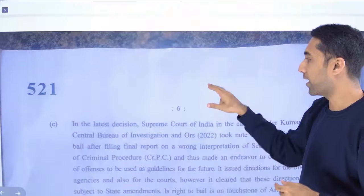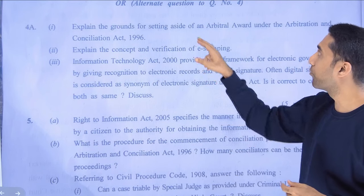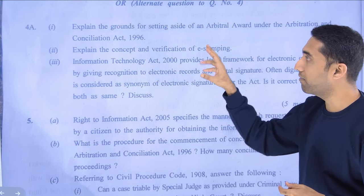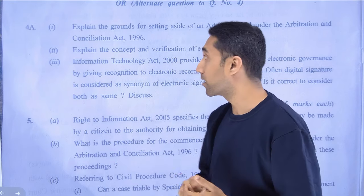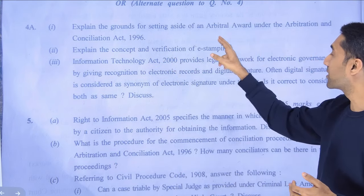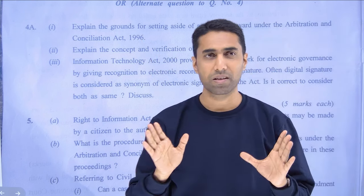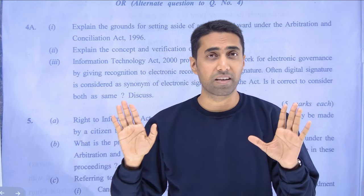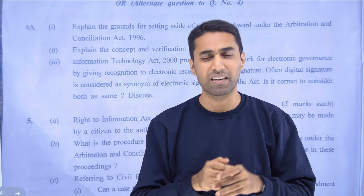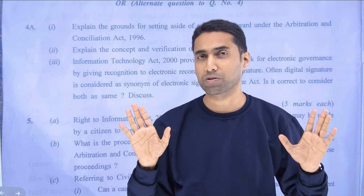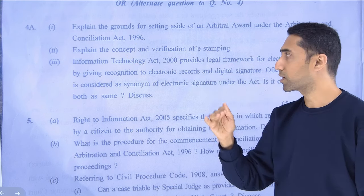Then they ask about the Information Technology Act. We also have another case law question. In question 4A — where you can choose between question 4 or 4A — one five-marks question asks you to explain the grounds for setting aside an arbitral award under the Arbitration and Conciliation Act. This is an extremely direct question. If you have reasonably studied the ICSI material or any coaching material, this is very simple. You can explain all the grounds.